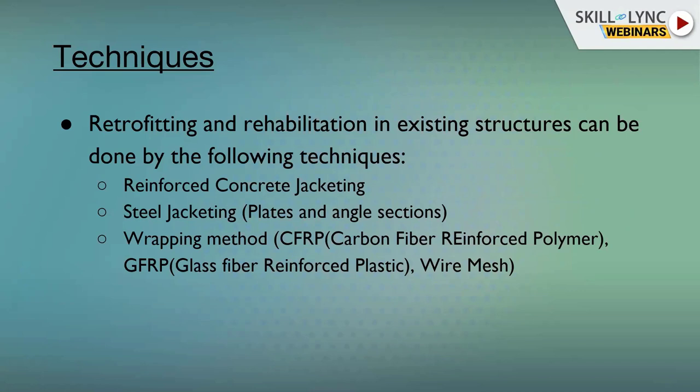The wrapping method is commonly visible on social media showing column failures in flyovers. The black wrapping seen on damaged columns is not paint — it is carbon fiber reinforced polymer (CFRP), which has strength hundreds to thousands of times greater than reinforced concrete. It is wrapped around columns, beams, and flyover structures to make them stable under heavy live loads, moving loads, and wheel loads.